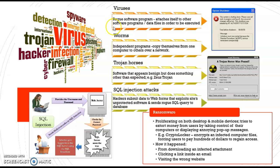A virus is something we call rogue software programs — something that you don't want. They will attach themselves into other software programs or other data files in order to be executed. They want to make sure that you recognize them as a legitimate file that you can click, but once you click, you already spread the virus. This is what we mean by a virus.